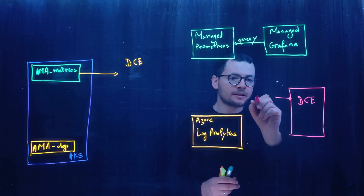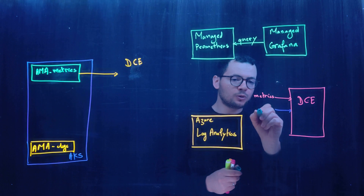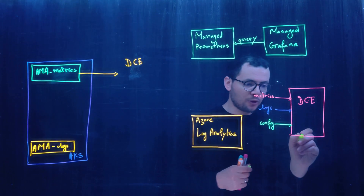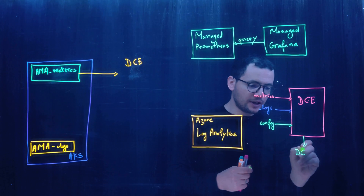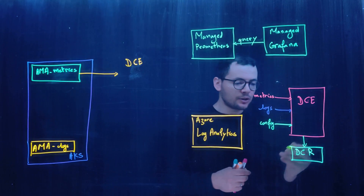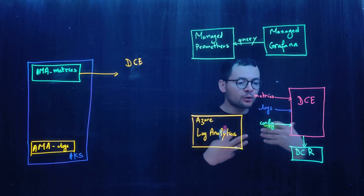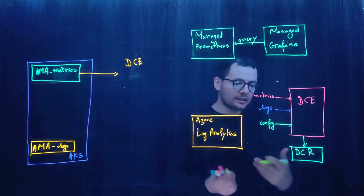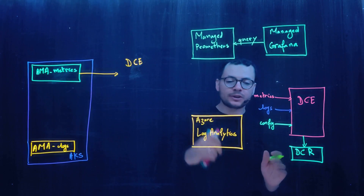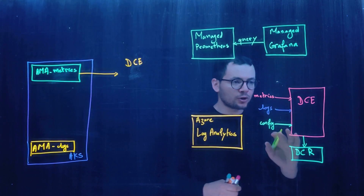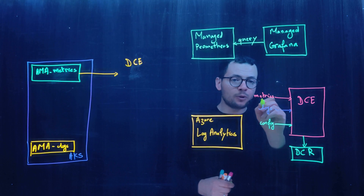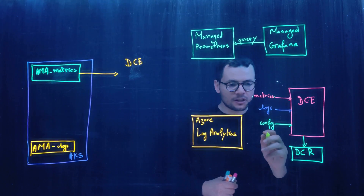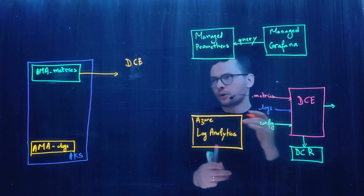The DCE exposes one endpoint for collecting metrics, a second for collecting logs, and a third for retrieving configuration. That configuration is the DCR — the data collection rule — another Azure service that lets you specify rules for your logs and metrics. You can perform data transformation, add or filter metrics and logs before sending them to Managed Prometheus and Log Analytics. The DCE ingests the metrics and logs and sends them back to Azure Monitor.